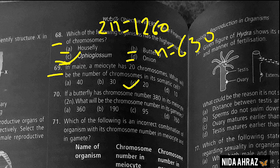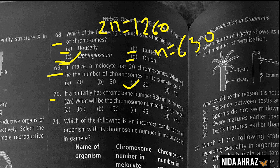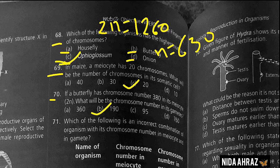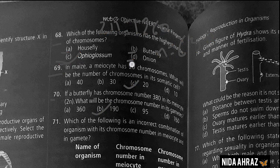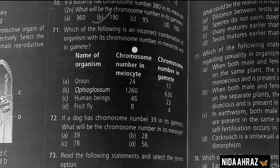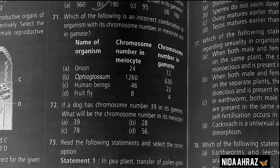If a butterfly has chromosome number 380 in its meiocyte (2n), what will be the chromosome number in its gametes? It's going to be half — 190. Option B is the correct choice.